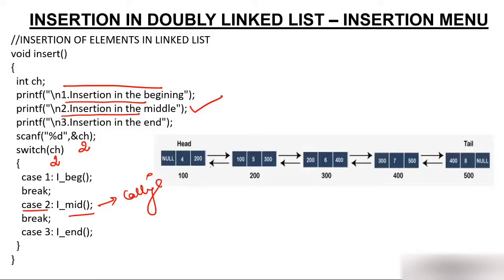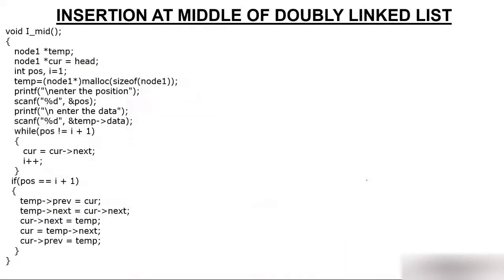Now you have a linked list having 5 nodes, and suppose you want to insert a node at the 4th position. In the insert_at_middle code, we create a pointer temp and a pointer current, and current is initialized with head.